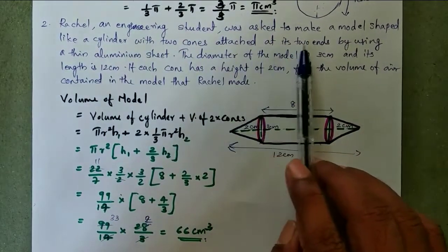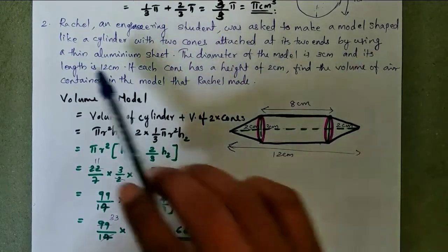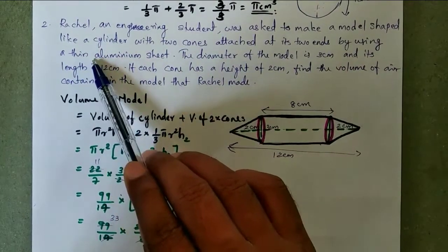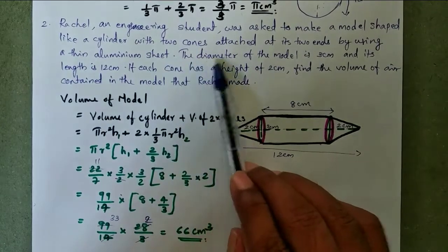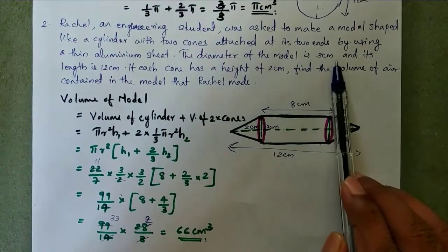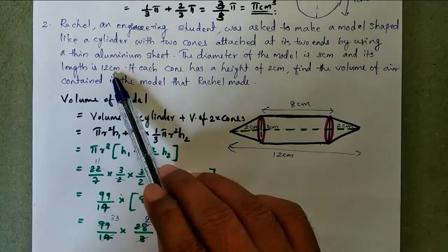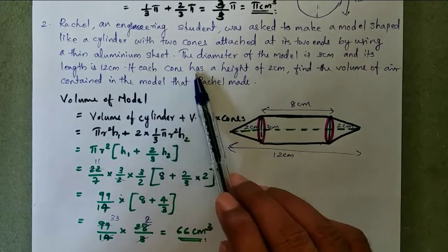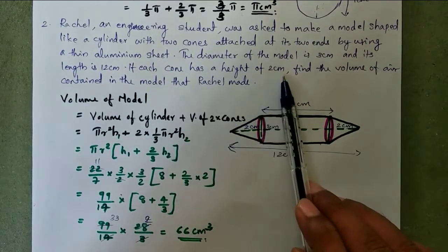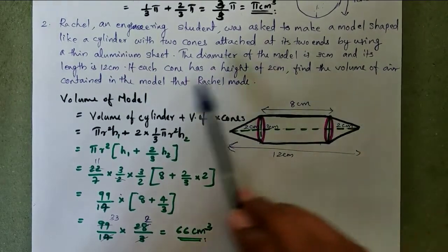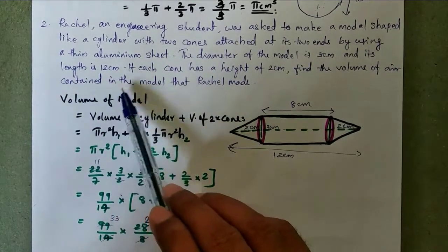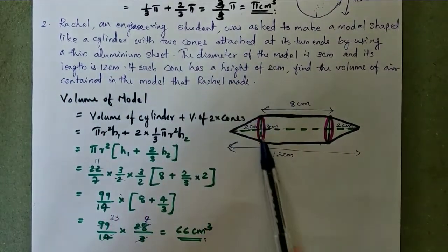The diameter of the model is 3 cm and its length is 12 cm. If each cone has a height of two centimeter, find the volume of air contained in the model that Rachel made.